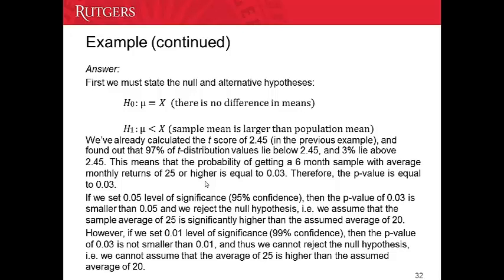But if we set the significance level a little lower, say 0.01, then the p-value of 0.03 is not smaller than 0.01, so we cannot reject the null hypothesis. We cannot conclude that the average of 25 is significantly higher than the assumed average of 20.